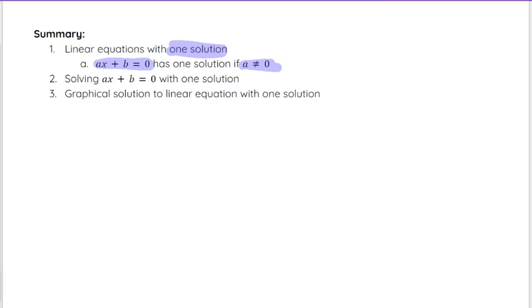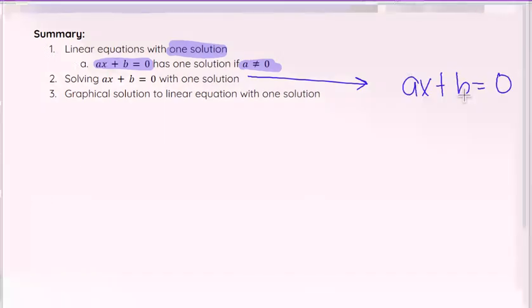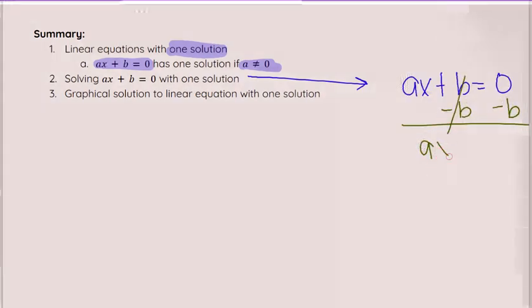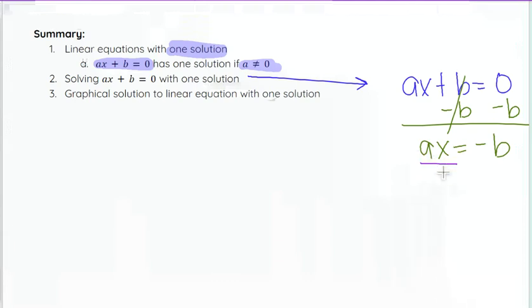Solving AX plus B equals 0 with one solution. Remember, when you're solving that, we start by moving the constant over, so we subtract B from both sides. We get AX equals negative B, and then we would divide both sides by A. And again, A and B are actual numbers. This is just the general format.